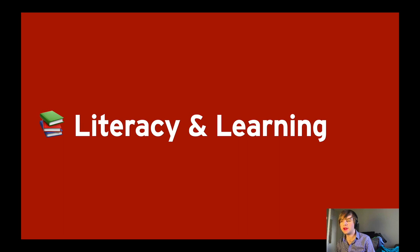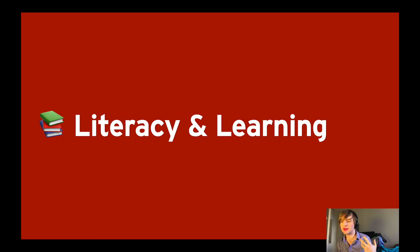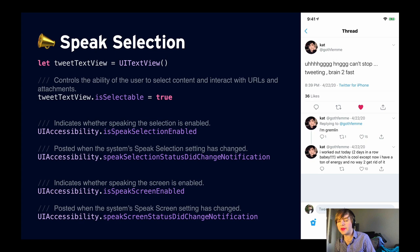Next, I want to talk about literacy and learning — challenges that include difficulty speaking, reading, or managing complexity. Dyslexia and ADHD can be in here. I want to cover features that help reduce the cognitive load necessary to use an iOS device: speak selection, Safari Reader, and typing feedback. For speak selection — even if VoiceOver is turned off, some users might want certain things on their screen spoken to them. In the Twitter app demo, I select a tweet and use speak selection via the menu controller, and it reads: 'HMGGG can't stop tweeting. Brain too fast.'